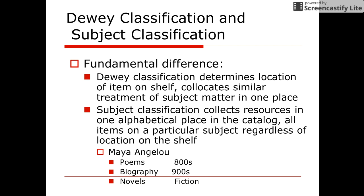Dewey determines the physical location of an item by its related discipline. So all history, for example, will go in the 900s regardless of the area or content of the specific historical event. There are specific areas in the 900s and other Dewey sections for specific time periods or countries, but in general, if it's related to the history discipline, it's going to be in the 900s.